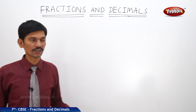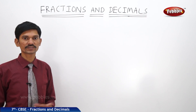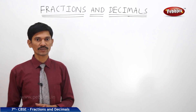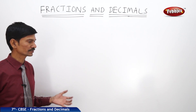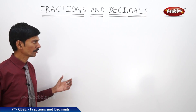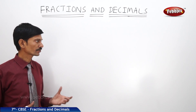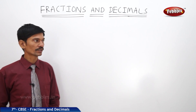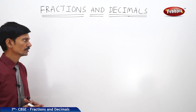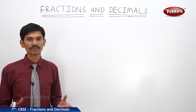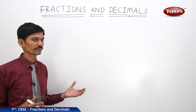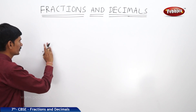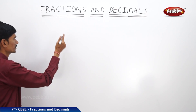So far we have learnt about fractions: types of fractions, and the addition, subtraction, multiplication, and division of fractions, their properties, and reciprocals of fractions. Now let us shift to the topic of decimal numbers. You have already learnt about decimal numbers in previous classes, so let us recall a few concepts.